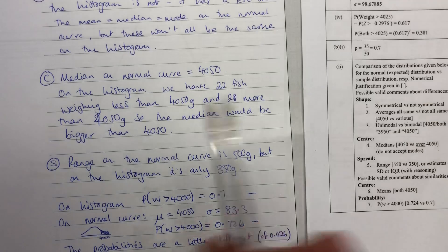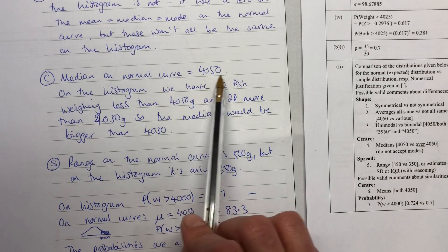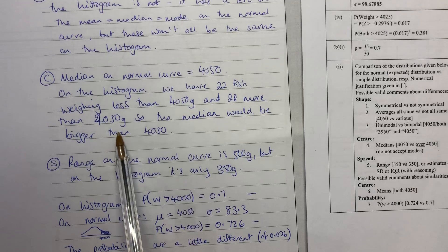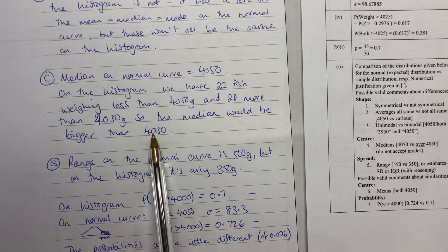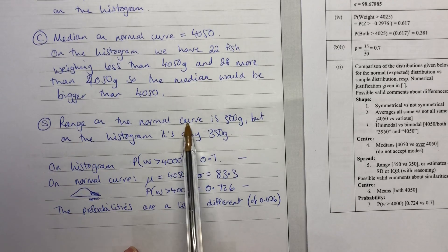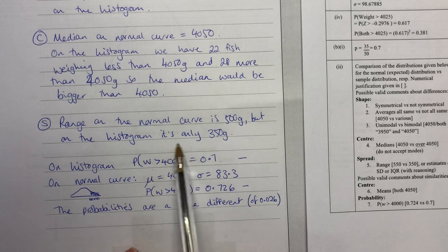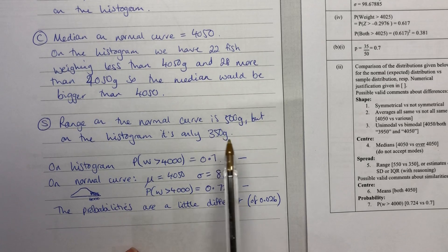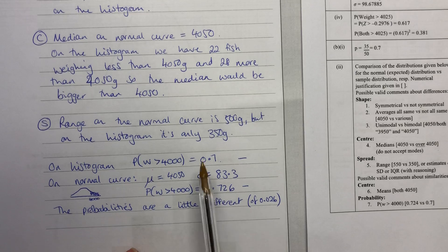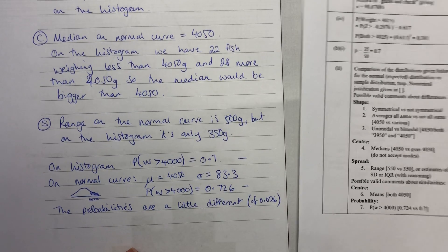Now for merit, we need three comparative statements with some numerical justifications for at least two of them. So we've got the median on the normal curve here is 4,050, whereas on the histogram, we said that that wouldn't match up. It would be more than 4,050, and we've backed that up with numbers. So there's one of the things we've talked about with numbers. The range on the normal curve is 500 grams, but on the histogram, only 350. Again, we've backed them up with numbers, and the same with our calculation here. We've backed them up with numbers. So we've actually got three things we've talked about with numbers included.